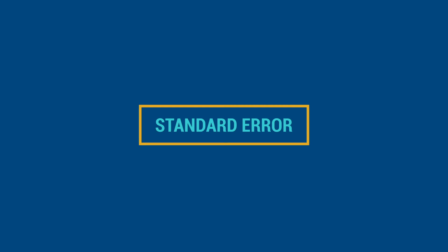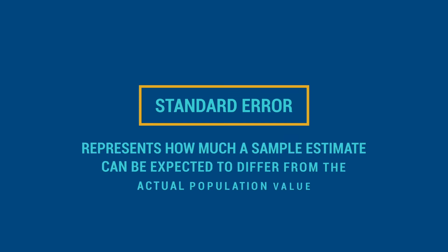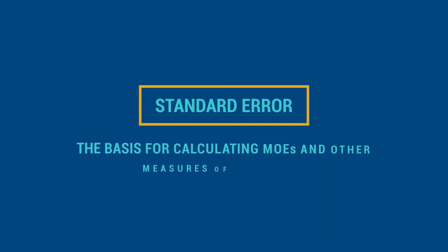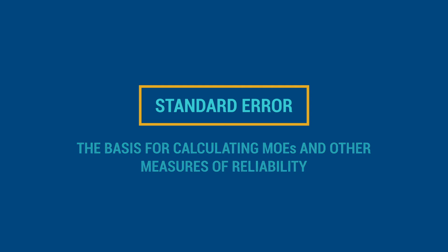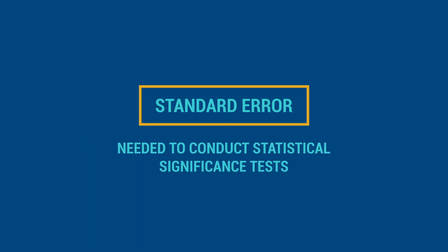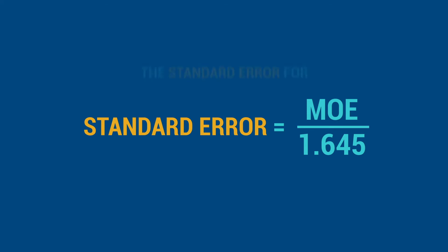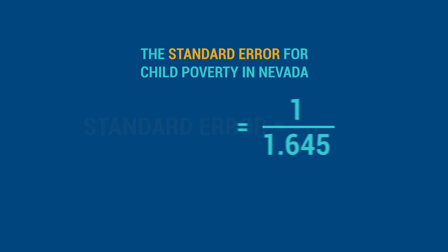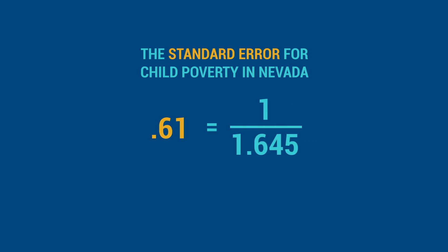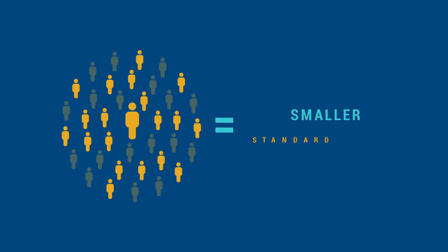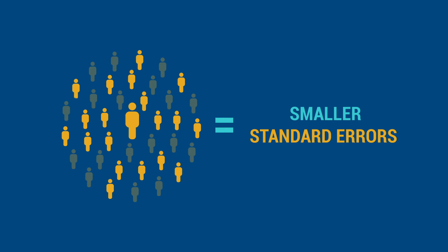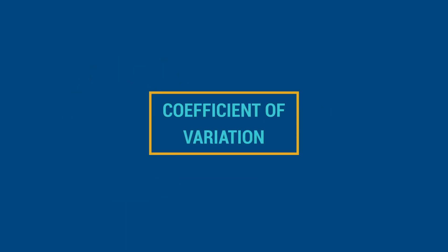The standard error is another measure of reliability. Standard error represents how much a sample estimate can be expected to differ from the actual population value. They're the basis for calculating MOEs and other measures of reliability. Standard errors are also needed to conduct statistical significance tests. Data users can calculate the standard error of an ACS estimate by dividing the MOE by 1.645. In general, the larger the sample size, the smaller the standard errors of the estimates produced from the sample data.